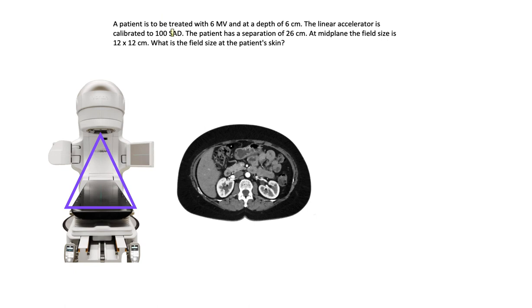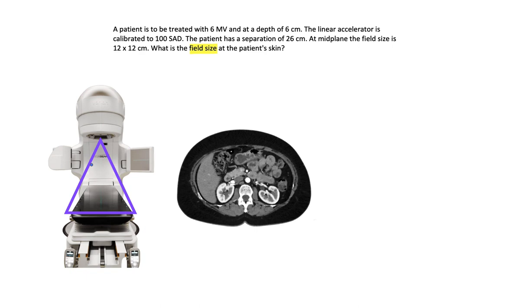Right off the bat, when we're looking for field size at different distances, we are going to use a direct proportion. Direct proportions will compare similar triangles. This is an example of a linear accelerator, what's used to treat cancer. As the beam is coming out of the treatment head, it's coming out in this triangular direction. So that means as the beam gets further from the source, the beam is spreading out more.